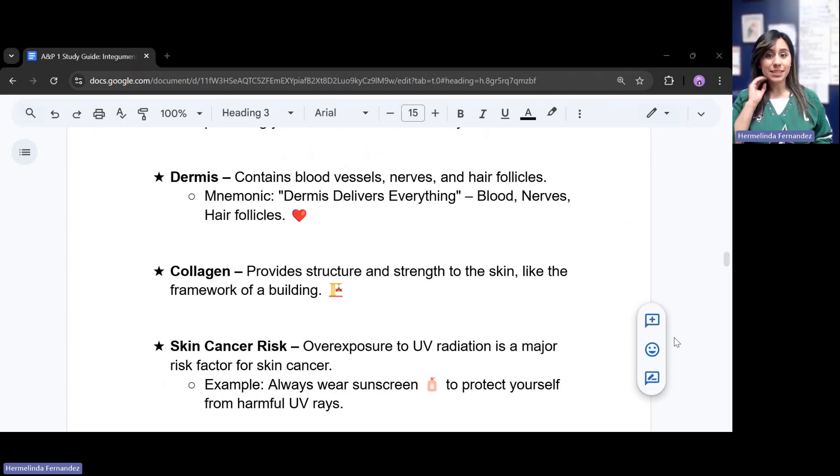The dermis contains blood vessels, nerves, and hair follicles. A mnemonic for this would be dermis delivers everything: blood, nerves, and hair follicles. Collagen provides structure and strength for the skin, like the framework of a building. Think of it kind of like that.